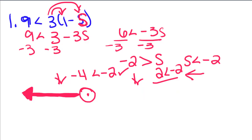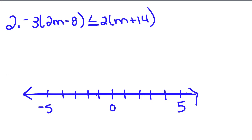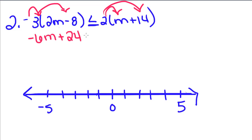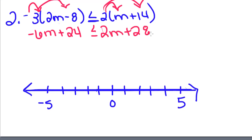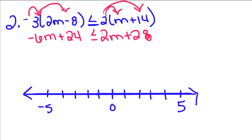One more example: negative 3 times the quantity of 2m minus 8 is less than or equal to 2 times the quantity of m plus 2. First thing we're going to do is distribute on both sides: negative 6m plus 24 less than or equal to 2m plus 28. Now you might say, didn't we multiply by a negative? Yes, but we don't flip the sign yet because we only multiplied one side by a negative. It only affects your inequality when you multiply or divide both sides by a negative.